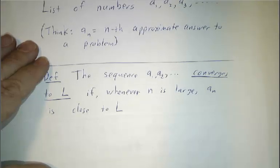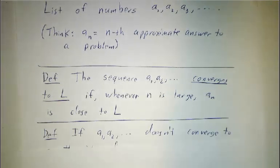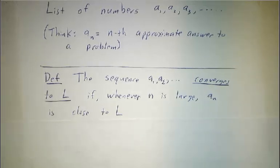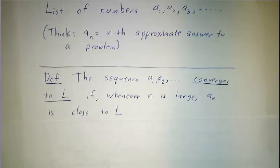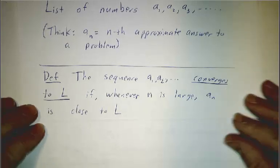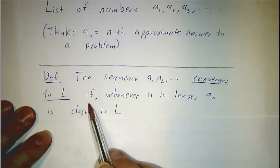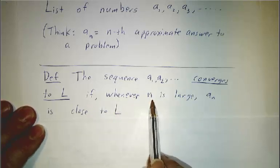So let's define our terms. We say that the sequence converges to L if the numbers in the sequence get closer and closer to L. Now, the precise definition of convergence, where we address the question of how close is close and how large is large, we'll get to that in the next video. For now, let's just say that the sequence converges if you get closer to L when n gets bigger and bigger.